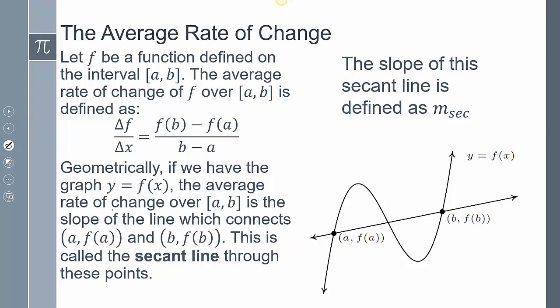Defining the average rate of change: Let f be a function defined on the interval [a,b]. The average rate of change of f over that interval [a,b] is defined as Δf/Δx = [f(b) - f(a)]/(b - a). This equation here is the equation that we're going to use when we're trying to find that average rate of change.